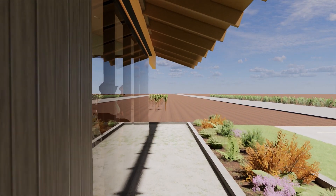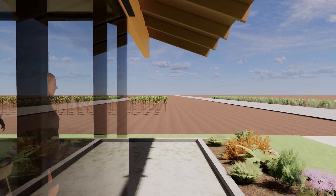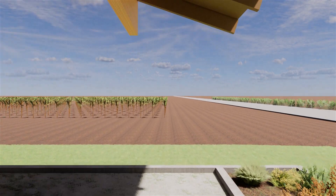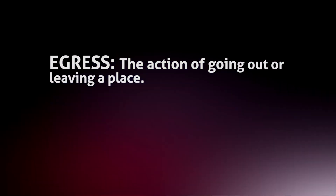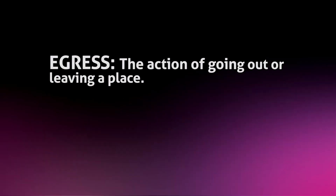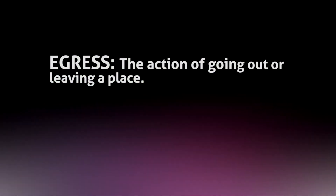We're talking about this today because I had to take this new project and create a code compliance plan to show that we're meeting all the requirements for emergency exiting. In architecture we call this egress. The definition is simply the action of going out or leaving a place. As architects we have to plan for emergencies like fires and make sure that everyone can exit the building safely, planning where the exits are and how many there are based on the space we're designing.